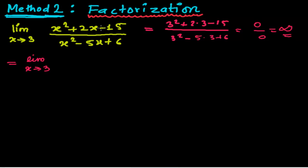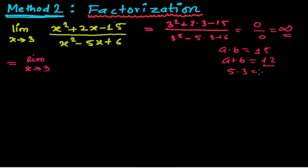For the factorization I'm using a splitting method. I need to search two numbers whose product will be 15 and whose addition will be plus 2. Those two numbers are 5 and 3, because 5 times 3 equals 15 and 5 plus minus 2 equals 3. So one is 5 and another is 3, giving us x squared plus 5x minus 3x minus 15.